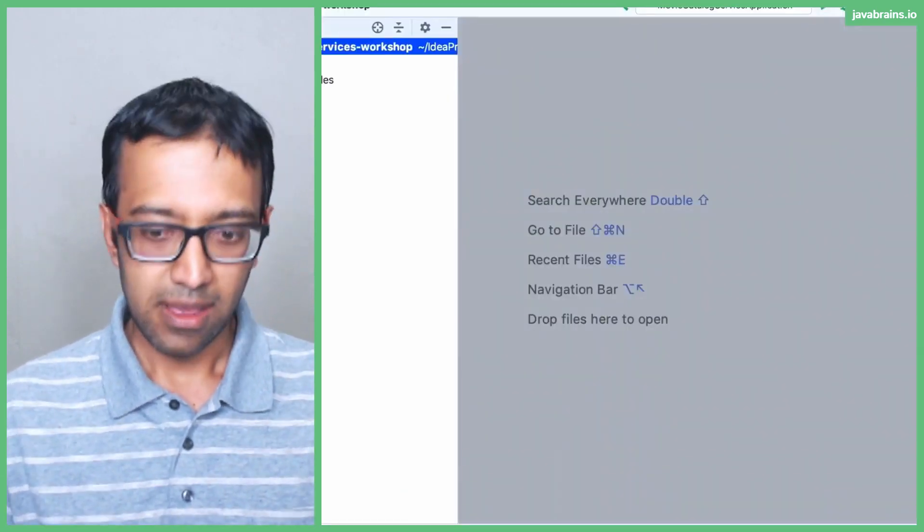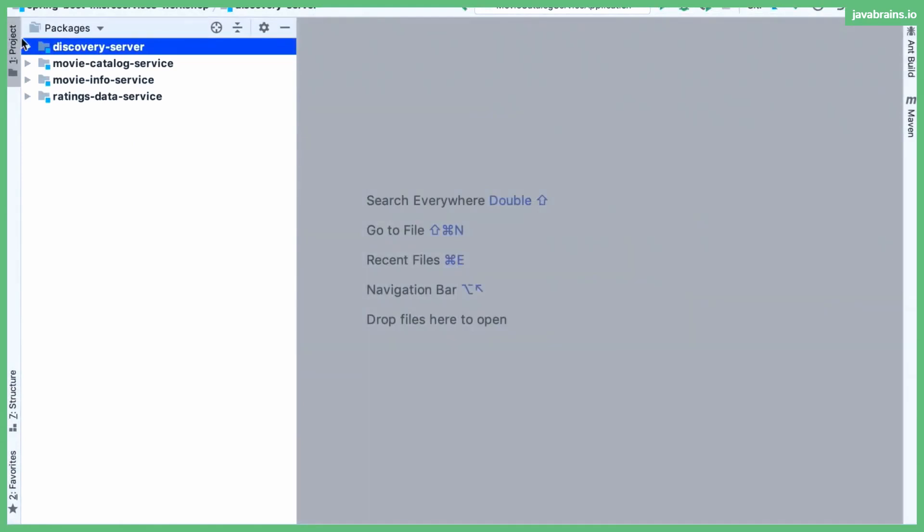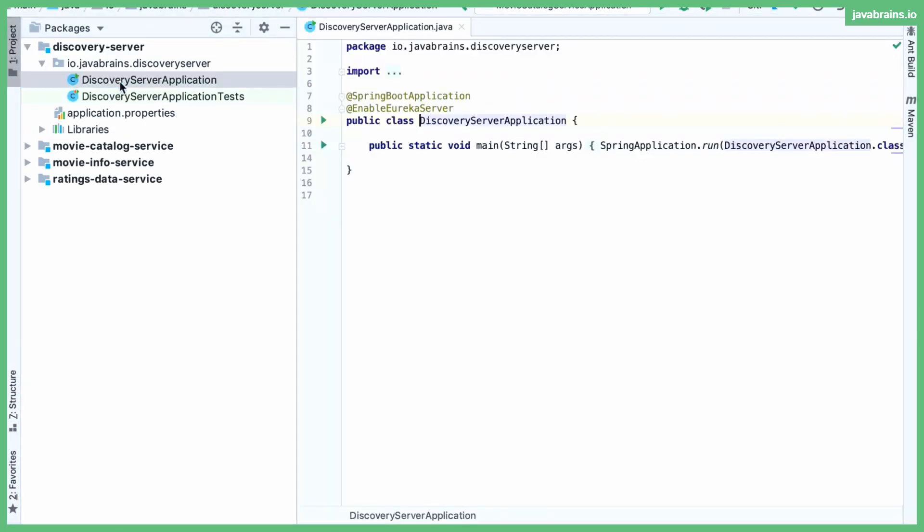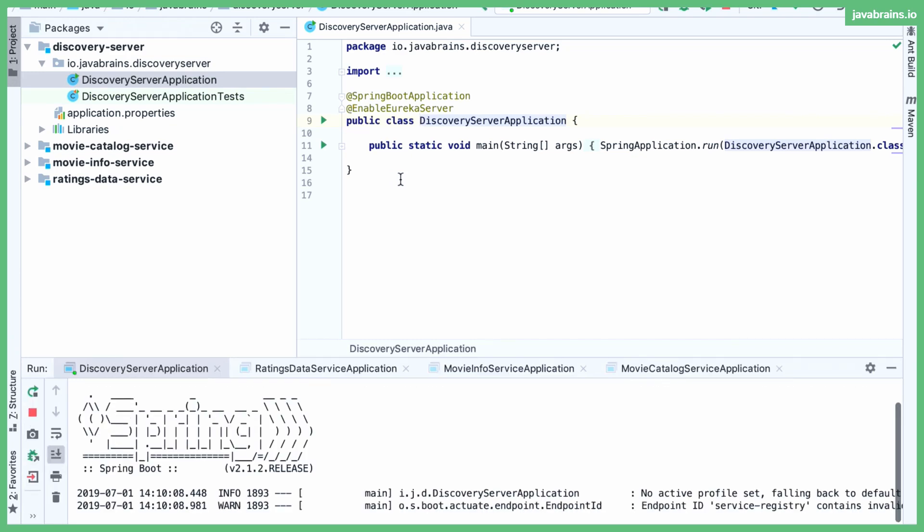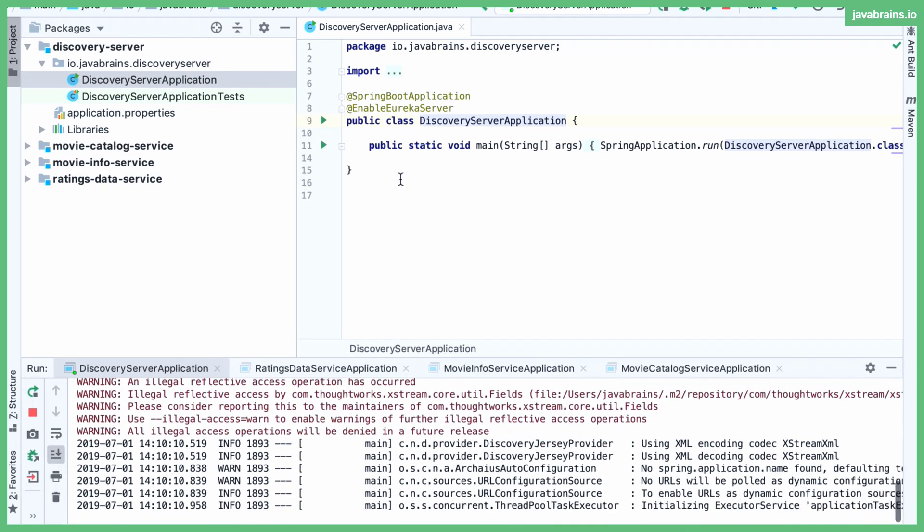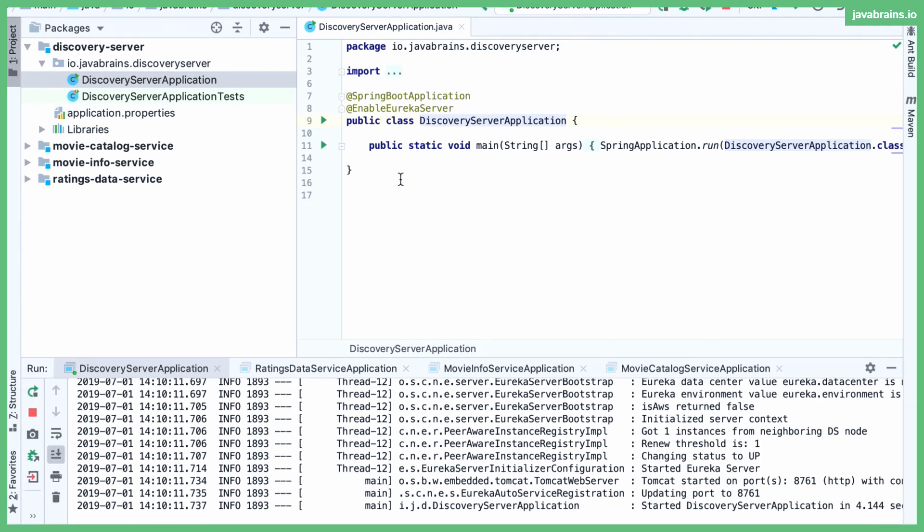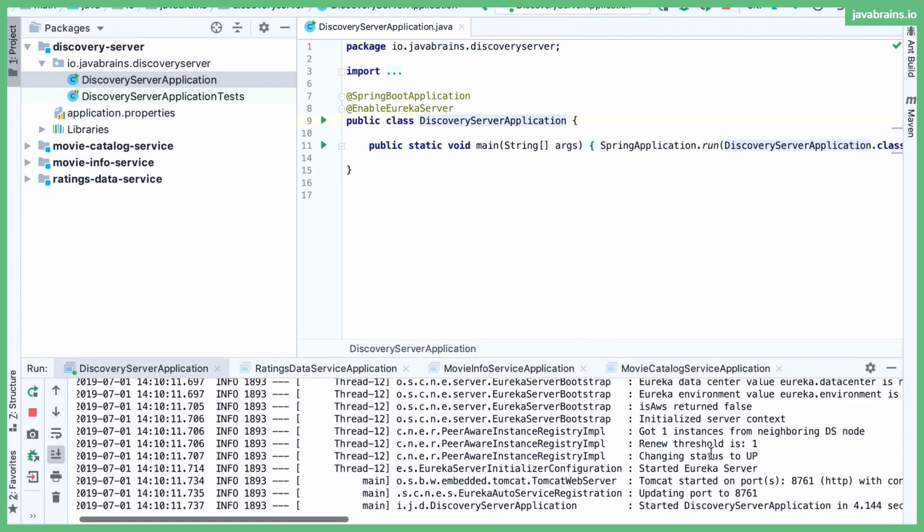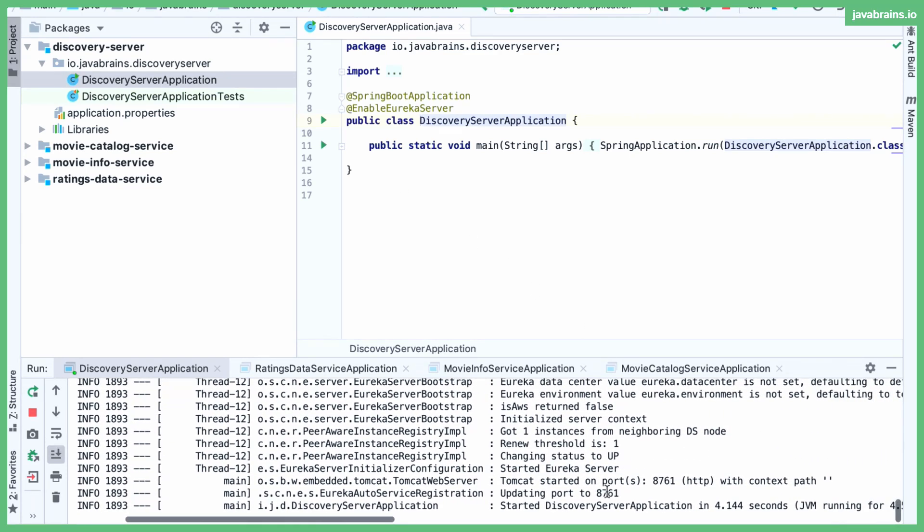So I'm going to show you the code that goes with it. I have the discovery server here, which is the Eureka server. Let me start that up. And we have three separate projects here on the left. You can see the movie catalog service, the movie info service, and the ratings data service. The Eureka service starts up at port 8761. So what I can technically do is access the Eureka dashboard at localhost colon 8761.